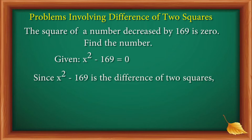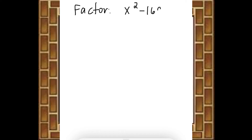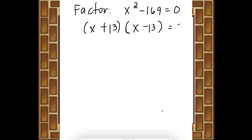Since x squared minus 169 is the difference of two squares, by factoring we get the square root of the first term x squared, which is x, and the square root of 169, which is 13. With the operations plus and minus, the factored form is: x plus 13 times x minus 13 is equal to 0.